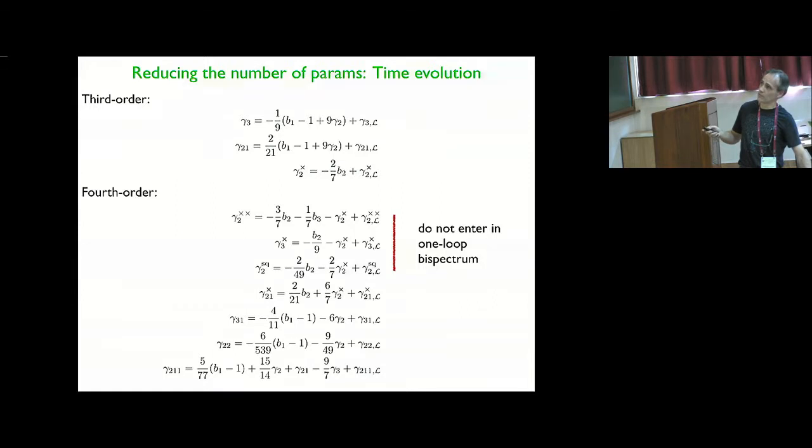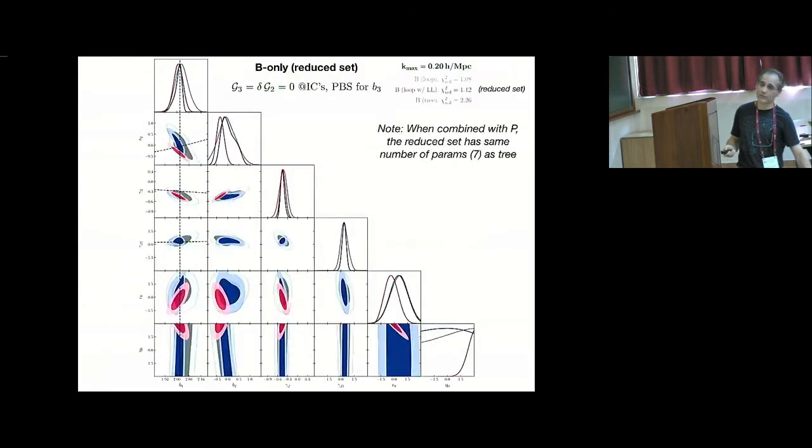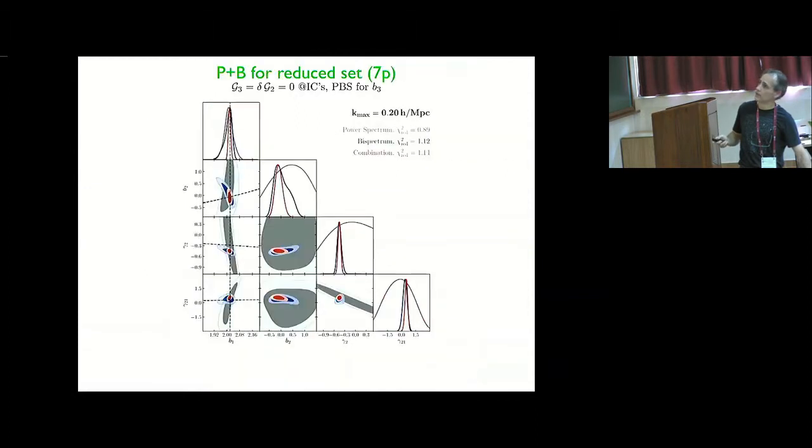So the question, can we do the same at cubic order to reduce the number of parameters even further? So that's what we do here. We reduce three more parameters. And we see that the penalty in chi-square is really marginal. So at the end, we have seven parameters instead of 10, which is the same parameters that you have at tree level. And we have a model which works a lot better than just tree level. And so here you can see how that reduced set works very well, even though the number of parameters has been reduced by an initial three.